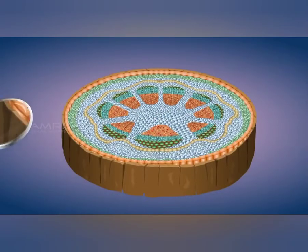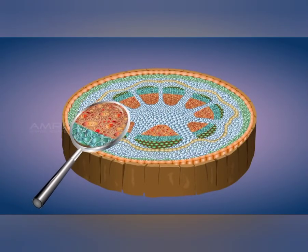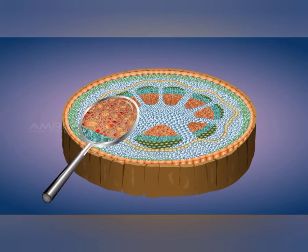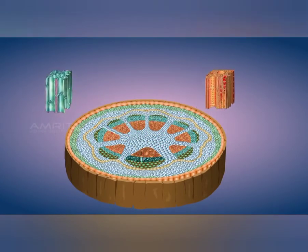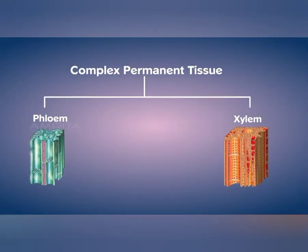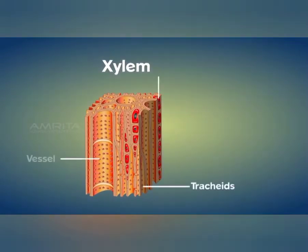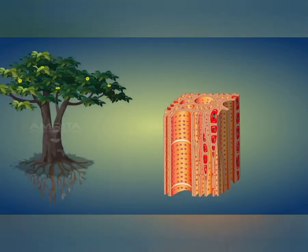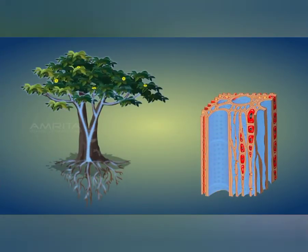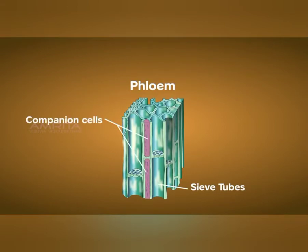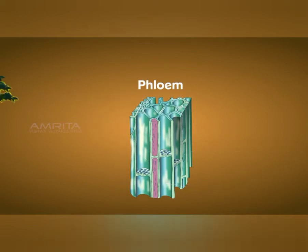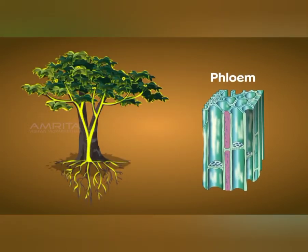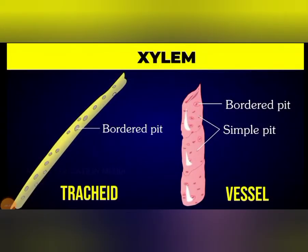Now talking about the complex permanent tissues. Some tissues in plants do not have the same structure — cells of these tissues have different structures but they commonly perform a single function. Examples include xylem and phloem. Xylem has four different types of components but all cells of xylem perform one single function, which is transportation of water. Phloem is also made up of four different components but still performs a common function of transportation of food throughout the plant body.